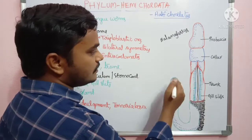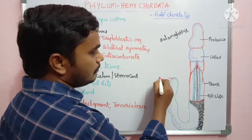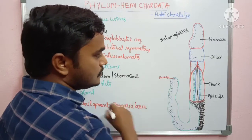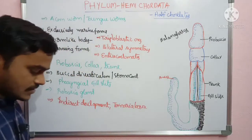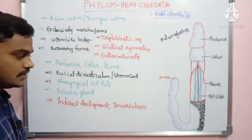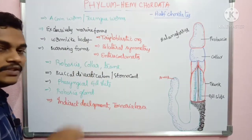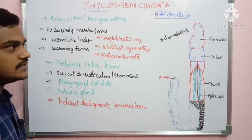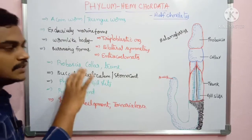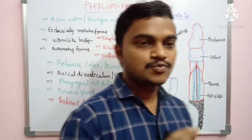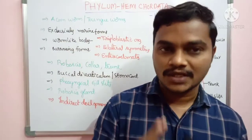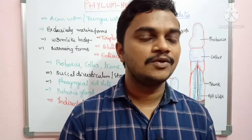The example Balanoglossus is of marine origin. There are about 20 forms of hemichordates, and these are maximum divided into two classes: one is Enteropneusta and another one is Pterobranchia.